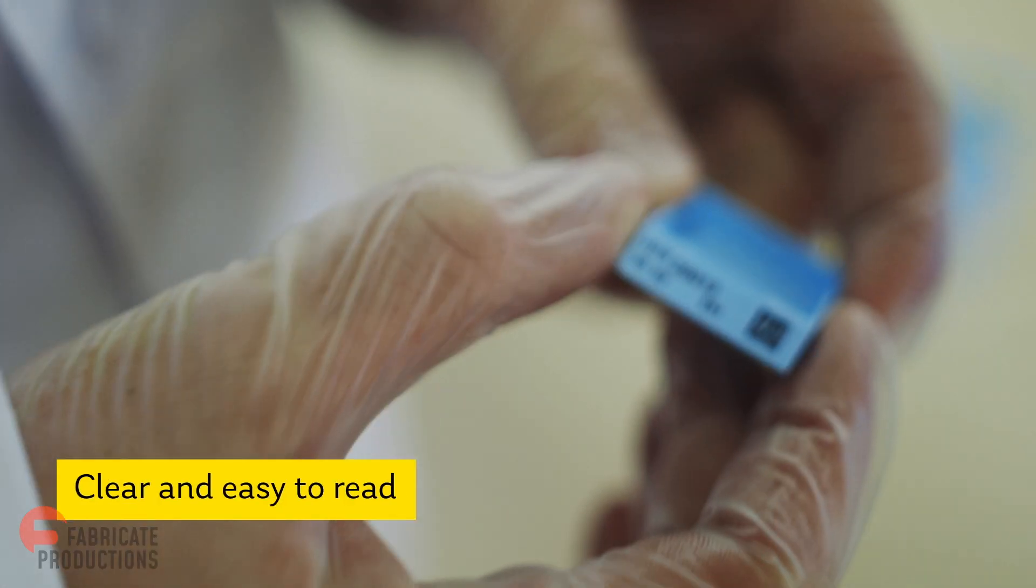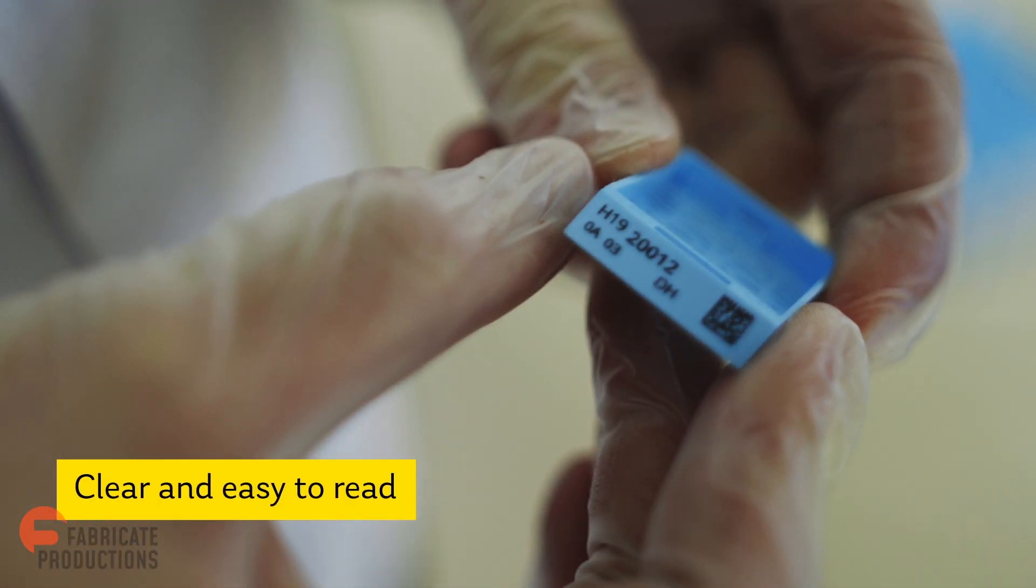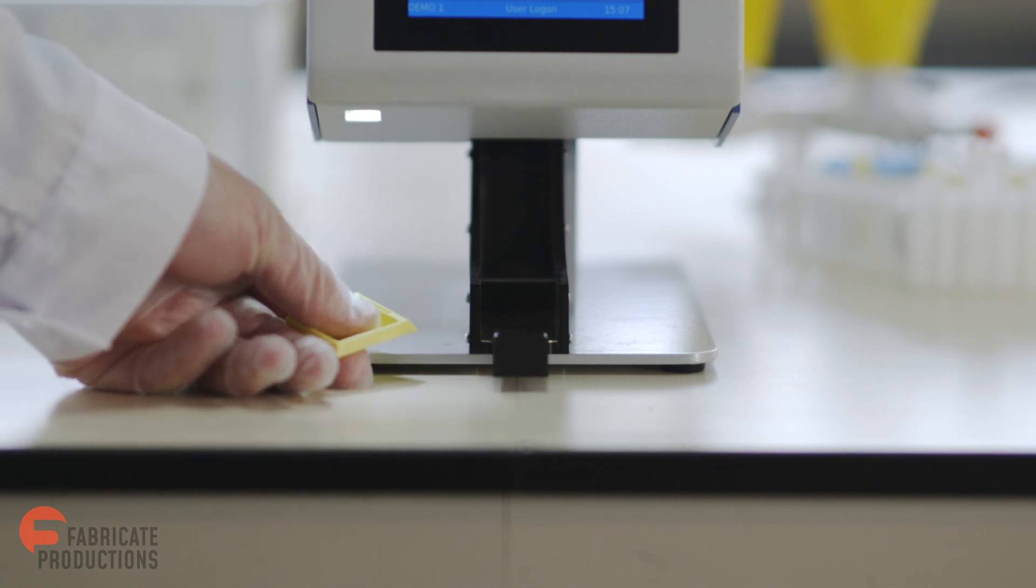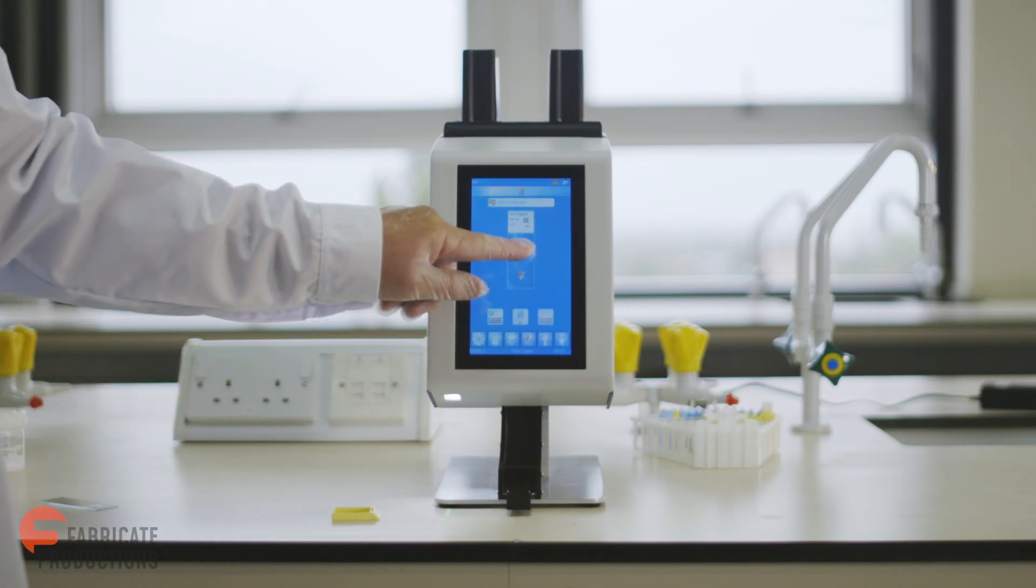A printer that prints clear, easy-to-read text and barcodes directly onto the cassette. The data can be scanned into the smart slide printer.